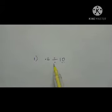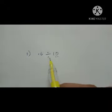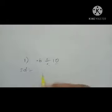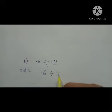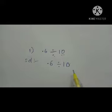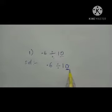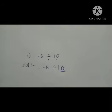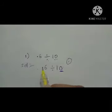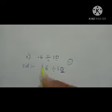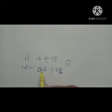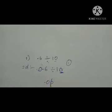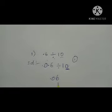Example: 0.6 divided by 10. Count zeros in 10 — only one zero. Move the decimal point one number to the left. We need to add a zero, so 0.06. Answer: 0.06.